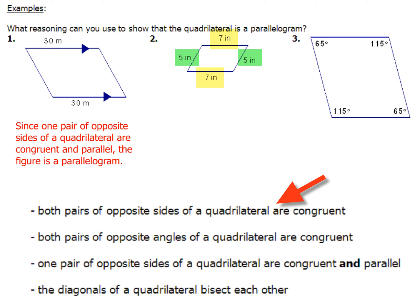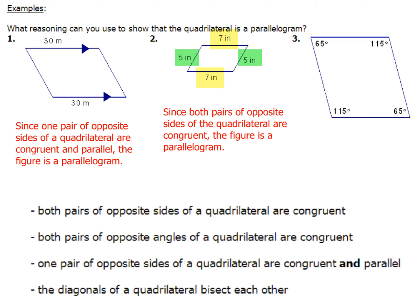We're going to have to write that in a sentence — we can't just say the figure is a parallelogram. Don't be lazy; make sure you write a sentence. The sentence would be: since both pairs of opposite sides of the quadrilateral are congruent, the figure is a parallelogram.